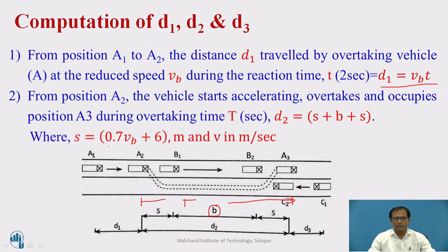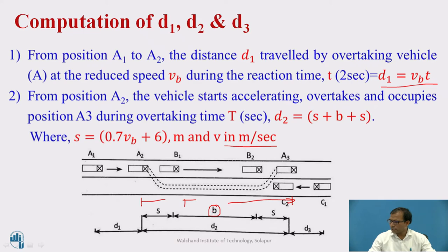There is an empirical equation suggested by IRC for calculating S: S equals 0.7 VB plus 6, in meters, where V is in meters per second. We also need to know how to calculate the value of b and the overtaking time T.